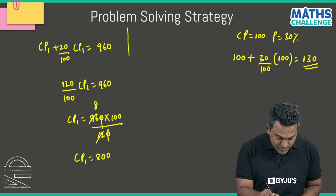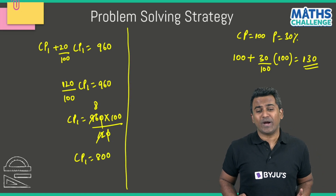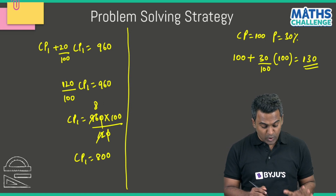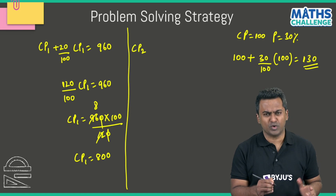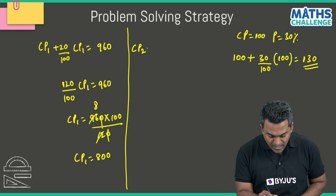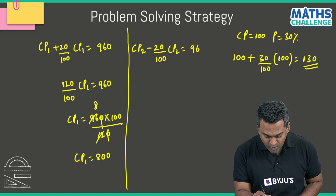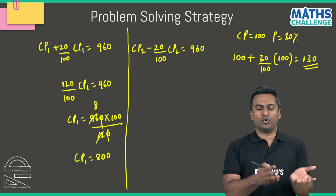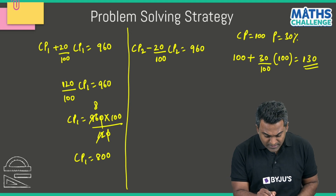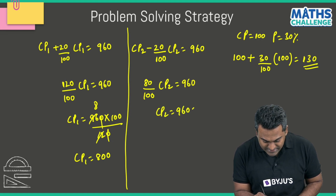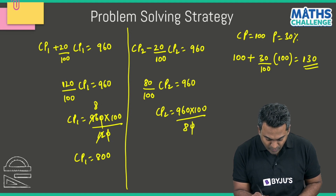Similarly, let's find the cost price of the laptop. On the laptop we made a 20% loss, so let the cost price be CP2. We have CP2 − 20% of CP2 = 960, which simplifies to 80% of CP2 = 960. Therefore CP2 = 960 × 100 / 80.